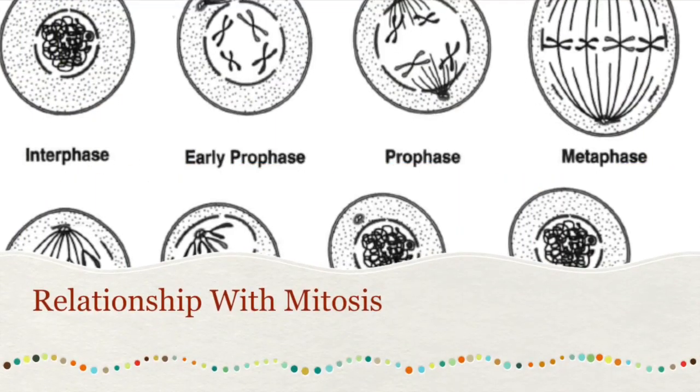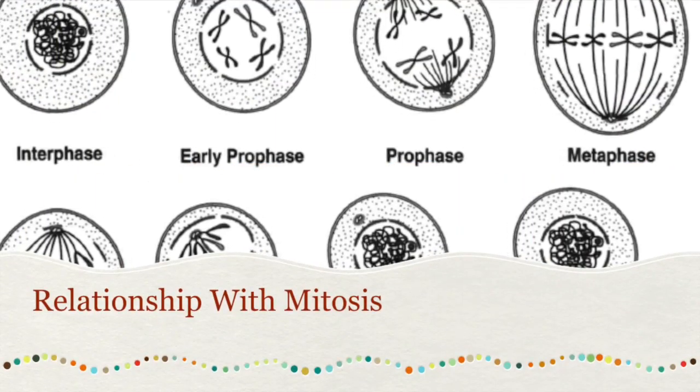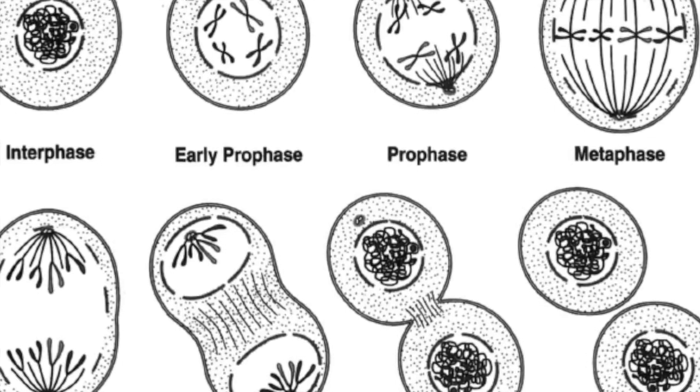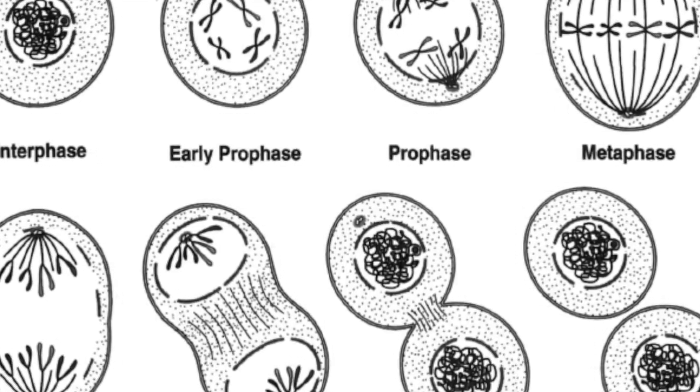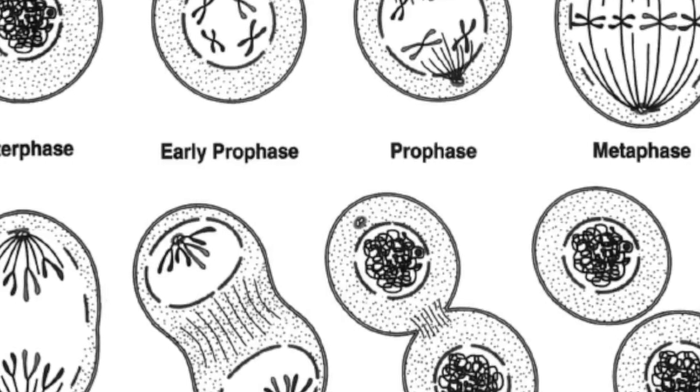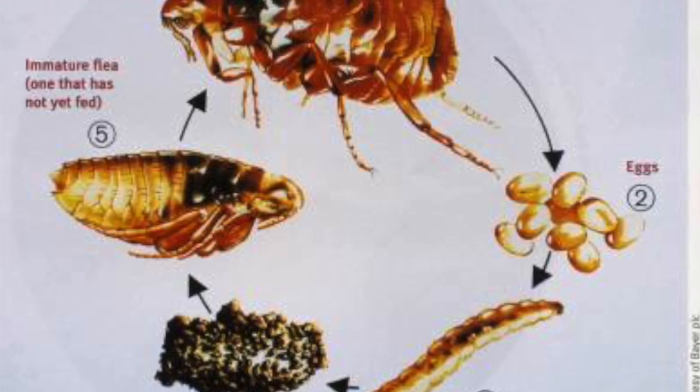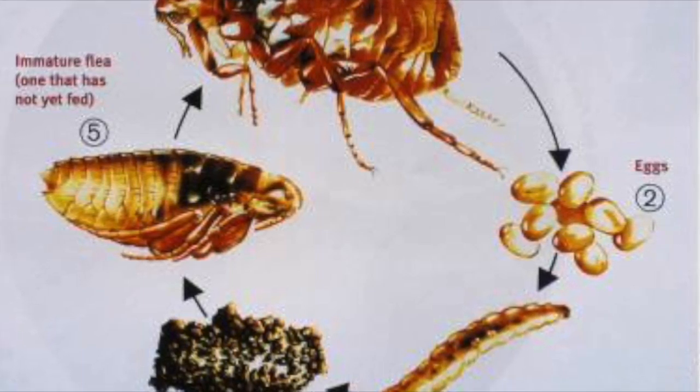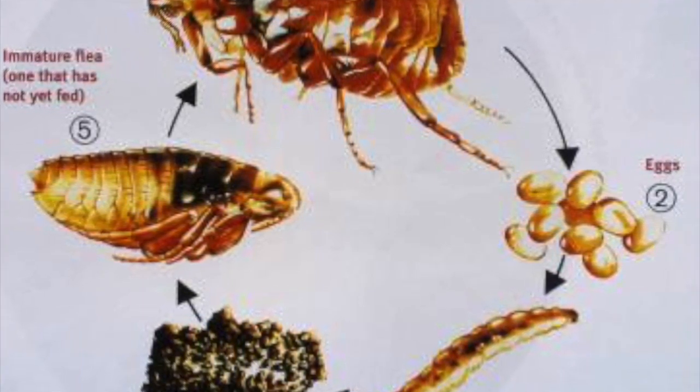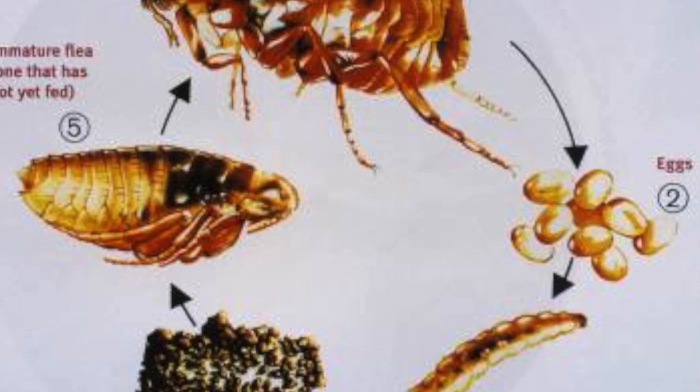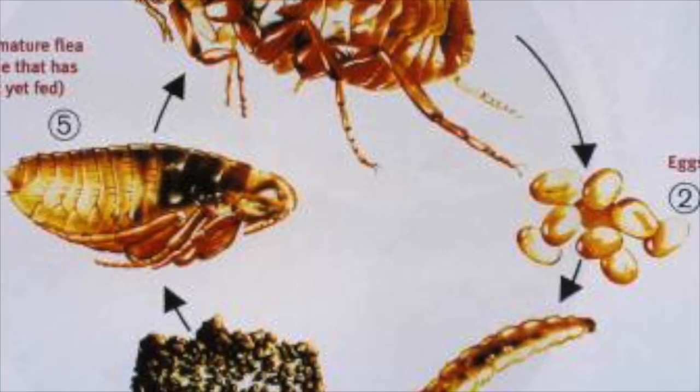Fleas, like every other living being, go through mitosis. This matters because it is the way that fleas replicate and divide to produce millions of fleas on dogs and other animals. We need to learn about how mitosis happens to know how we can stop the reproduction of fleas.